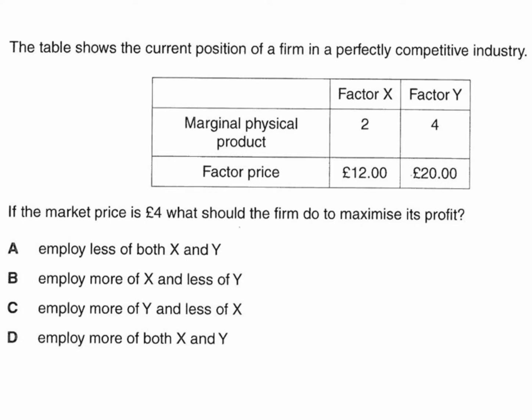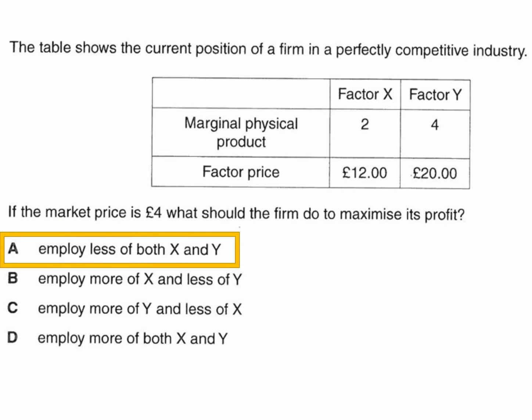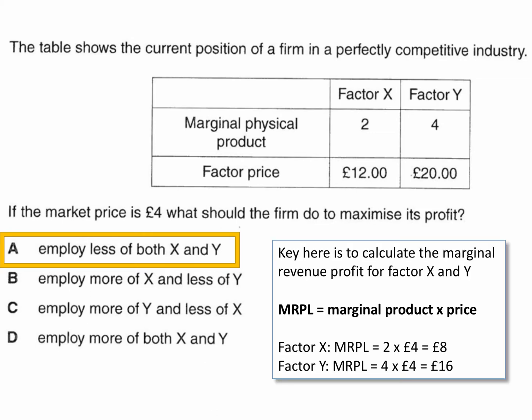OK, so this is a question about whether the firm should employ more or less of these two factors. The correct answer is A — the firm should employ less of both X and Y. So let's look at the answer and the reasons why it's A. The key thing here is to calculate the marginal revenue product for both Factor X and Factor Y.